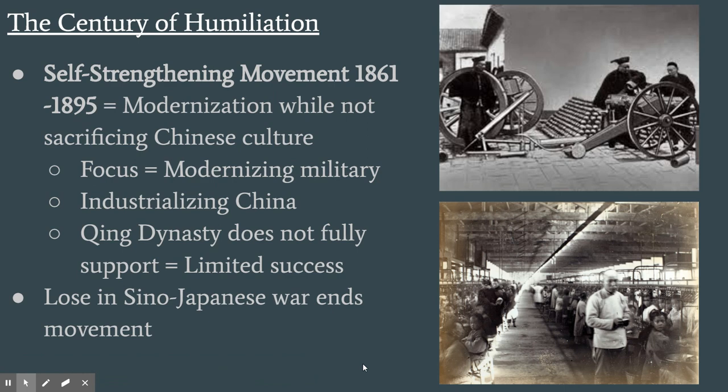Seeing that they were being taken advantage of, losing wars, and facing rebellions, the Chinese started what's called the Self-Strengthening Movement — about a 30-year period where China tried to modernize into a modern industrial nation. The focus was modernizing the military, both army and navy. Their secondary goal was industrializing China and building factories to support that military. However, the Qing dynasty did not fully support it, so the movement didn't really succeed.